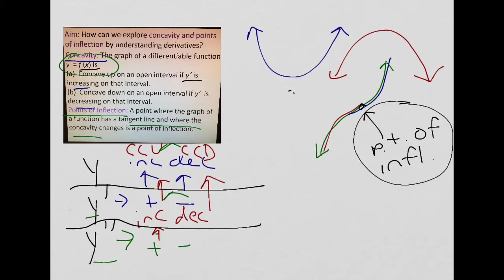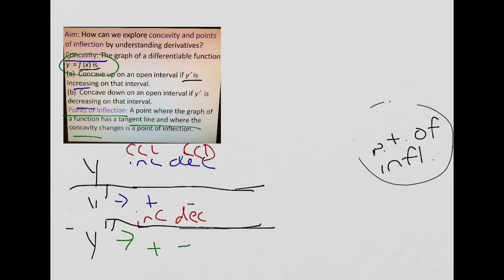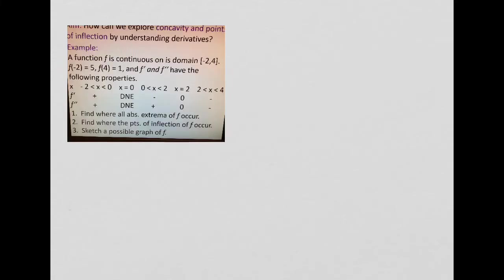So, let me erase this, all these kind of arrows. So, maybe that's a little bit clearer. That's what we've been saying all along. And let's get started with that example. So a function f is continuous on its domain, negative 2 to 4. So we're graphing from negative 2 to 4.